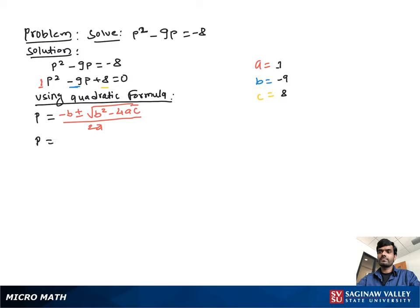= -b ± √(b² - 4ac) over 2a. Then substituting the value of a, b, c in this equation we get p = 9 ± √((-9)² -